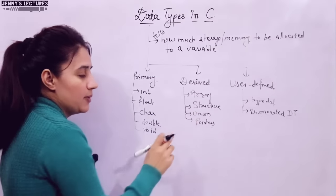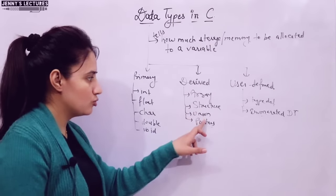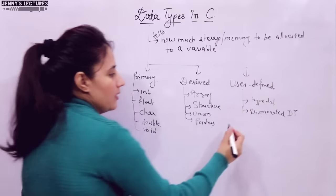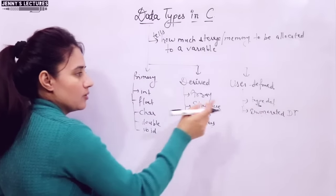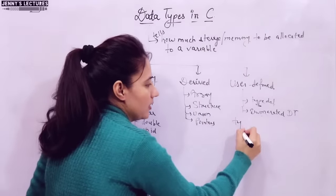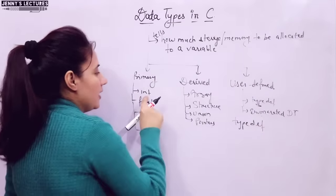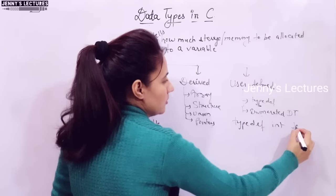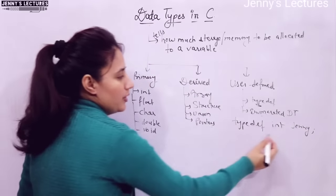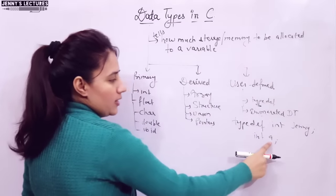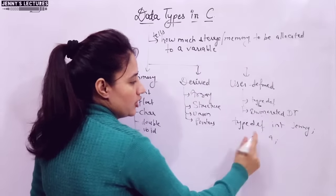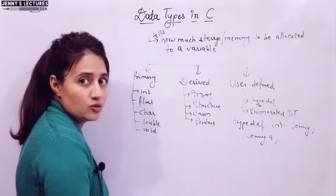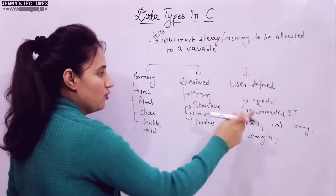Enum is an enumerated data type. These are separate chapters in C, so we will discuss them in separate videos. Typedef — we can discuss here. It's like you can give a customized name to these data types. Like I'm writing: typedef int Jenny. So now, when you write int a, it means you are declaring a variable of type integer. Rather than that, we can also write Jenny a, because I have renamed int as Jenny. So this is what user defined data type is.